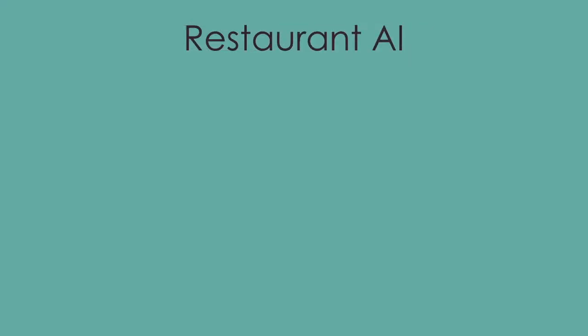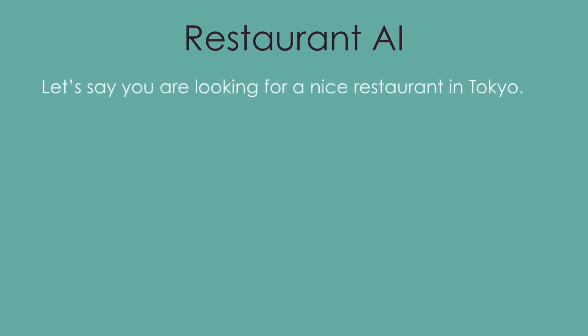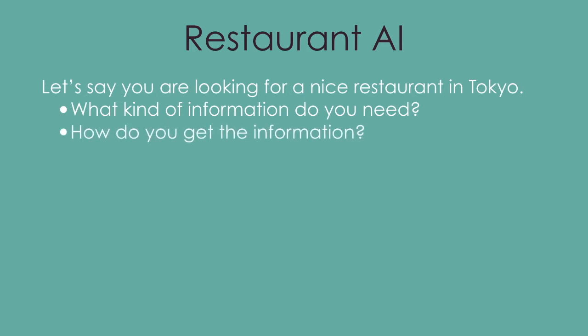Let's consider the following scenario. You're planning a trip to Tokyo, and you've never been to Japan. You're really looking forward to a very nice restaurant. What kind of information do you need? Well, is the restaurant far from the hotel? What kind of food do they serve? The price? Is the food tasty? And so on. How do you get this information?